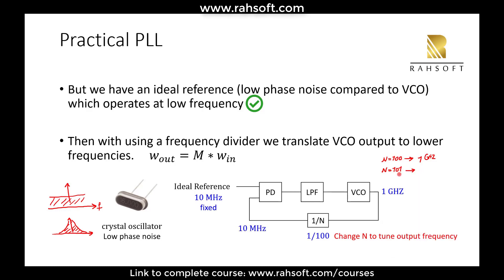We can tune the frequency by changing N. For example, if the reference is 10 MHz and N is 100, the VCO output will be 1 GHz. N is an integer here, so it accepts integer values — 100, 101, 102 — which is why we call this an integer PLL. Later in the course I'll introduce fractional PLLs as well, where N does not have to be an integer, but for now let's assume integer division.